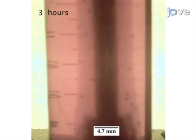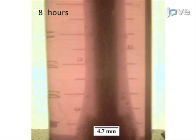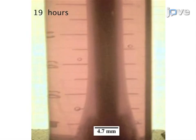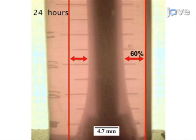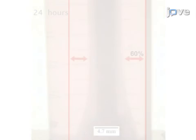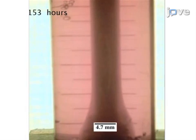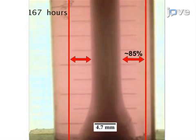During static maturation of the vessel constructs, the external diameter of the cellularized structures rapidly reduced. The diameter of the constructs reduced by 60 percent of their initial value in day one of static culture. By day seven, the constructs had reduced almost 85 percent.